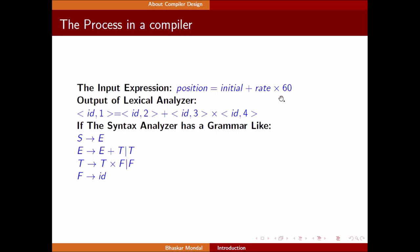We take as input position equals initial plus rate times 60. At the time of lexical analysis, it recognizes each part as a token. Position is an identifier - it's a variable name. The lexical analyzer generates a token ID. It assigns identifier comma one, giving an ID number to position as ID1.